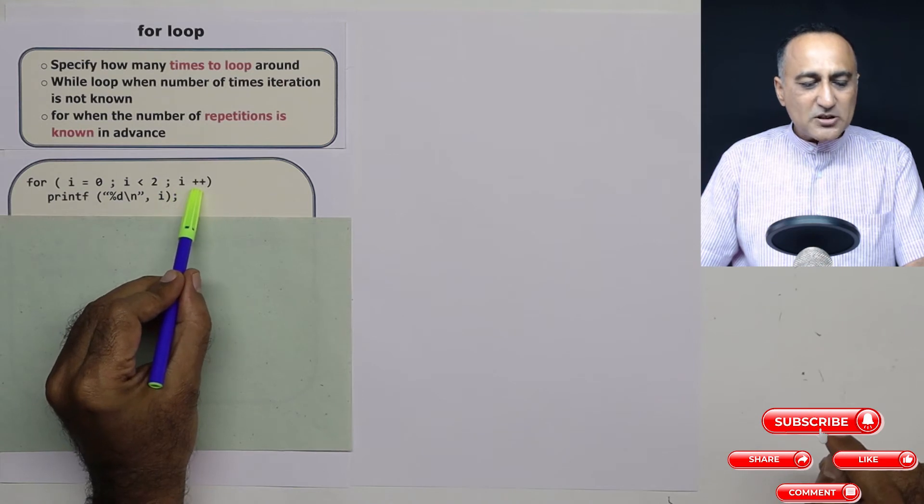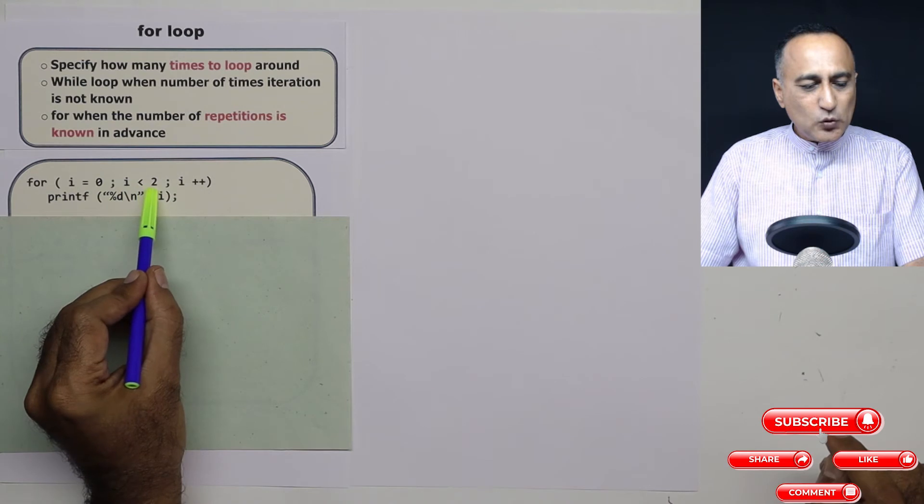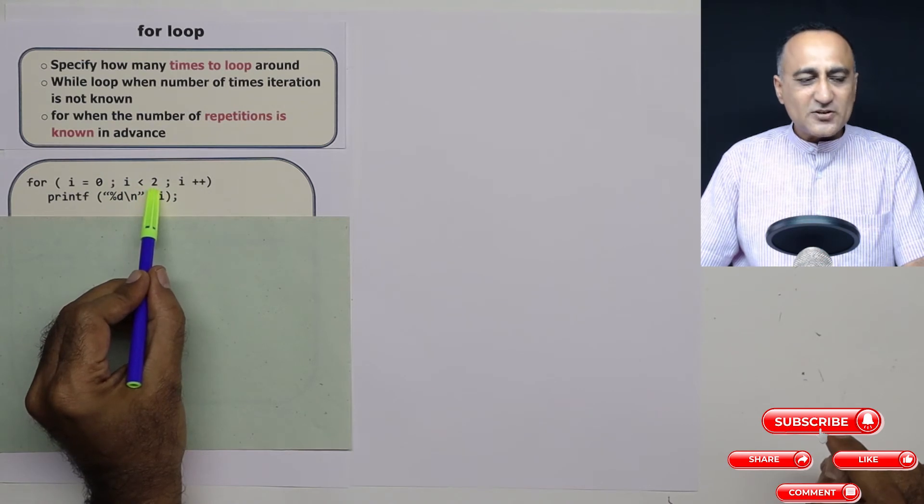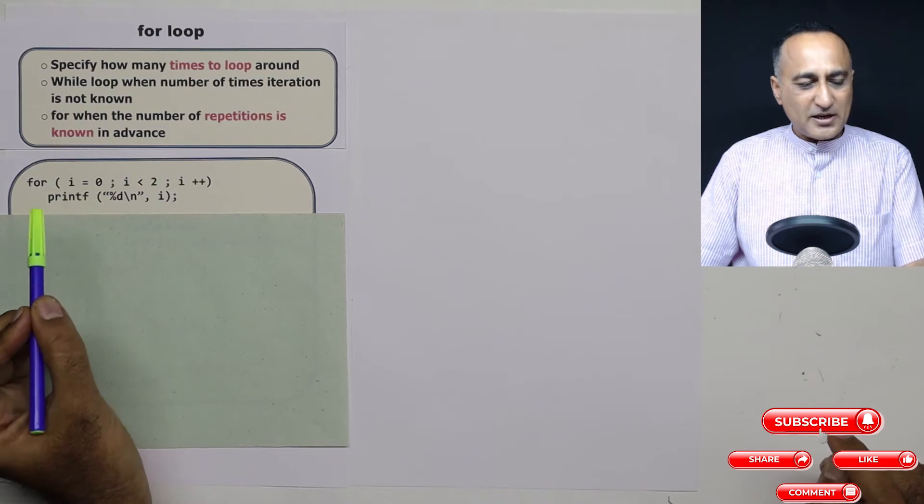Now i from one becomes two. Once it becomes two, it goes back here. Is two less than two? That condition is false. And it will come out after this printf statement.